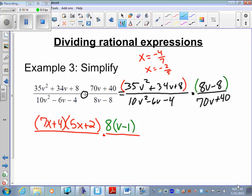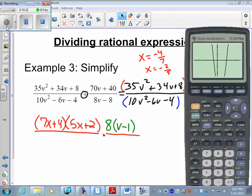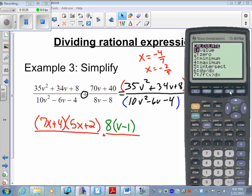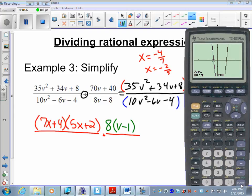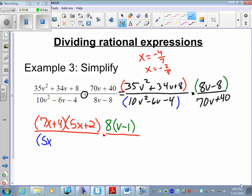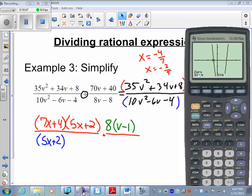Then we'll look at the first denominator, 10v squared minus 6v minus 4. Put it in, second trace, zero. Left bound, right bound. Negative 0.4 which is negative 2 fifths, so 5x plus 2. Next left bound, right bound, get 1, so that's x minus 1.